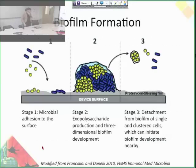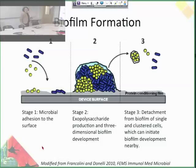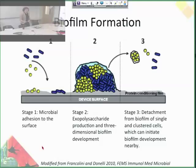Biofilm formation has three stages: adhesion of the bacteria to the surface; secretion of exopolysaccharides and three-dimensional biofilm development; and detachment from the biofilm of single cells, which then move on to spread the biofilm. Good biomaterials that are resistant to biofilms would ideally target one or all of these three stages.